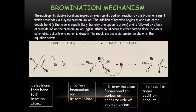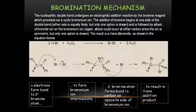Now let's see the mechanism of bromination. The pi electrons form a bond to the partial positive bromine atom first, to form the bromonium ion intermediate. The partial negative bromine atom then forms a bond to the carbon on the opposite side of the bromonium ion, resulting in the trans addition product: 1,2-dibromo-1,2-diphenylethane.